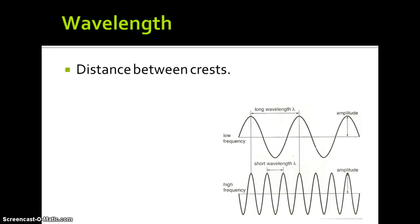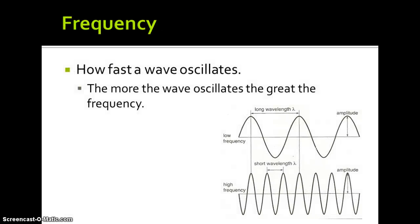Wavelength is the distance between crests. Frequency is how fast the wave oscillates. So the more the wave oscillates, the greater the frequency.